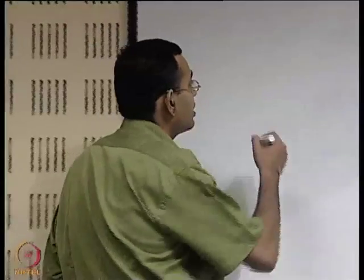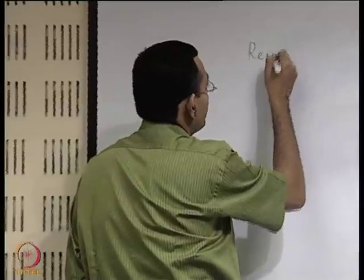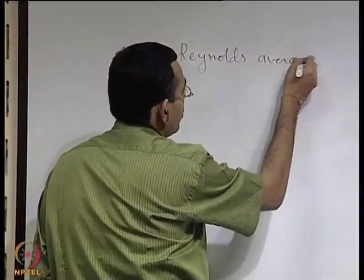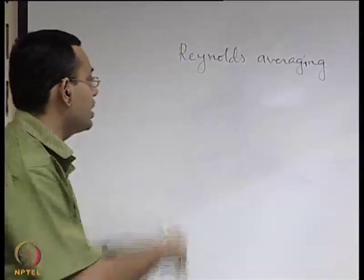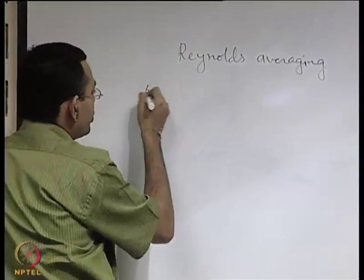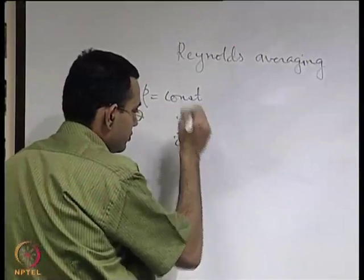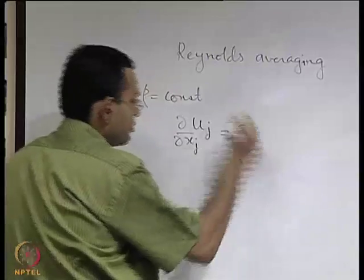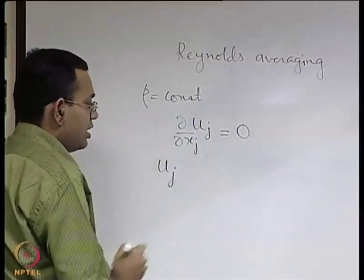With that background, what we will try to see is how we may statistically average the governing equations — the Navier-Stokes equation as an example. We will now see the method in which you average the Navier-Stokes equation, and since Reynolds contributed a lot towards that, we also call this the Reynolds averaging process. The Reynolds averaging process starts with the basic form of the governing equations. We start with the continuity equation and assume that we are dealing with a case when the density is constant. In the first step, we decompose the variable — here the velocity — into two parts: one is the mean and another is the fluctuation over the mean.